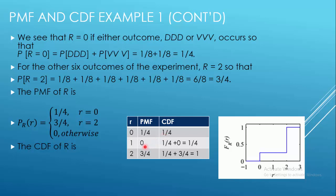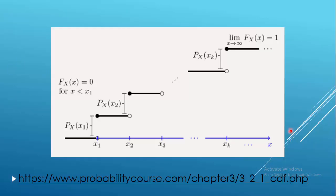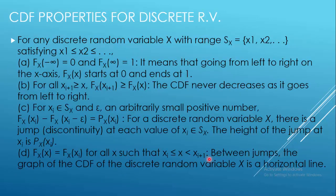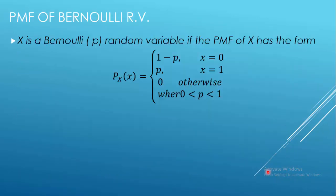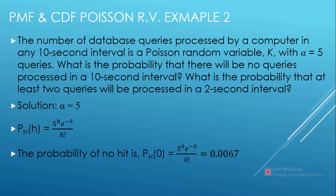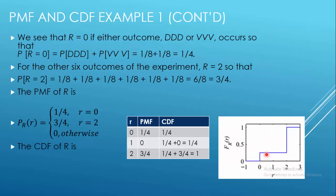The CDF is 1/4 at R=0, remains 1/4 until R=2, then jumps to 1. Between jumps, the graph of the CDF of a discrete random variable acts as a horizontal line. So between the jump at 0 and the jump at 2, it is 1/4, and from 2 onwards it remains at 1.